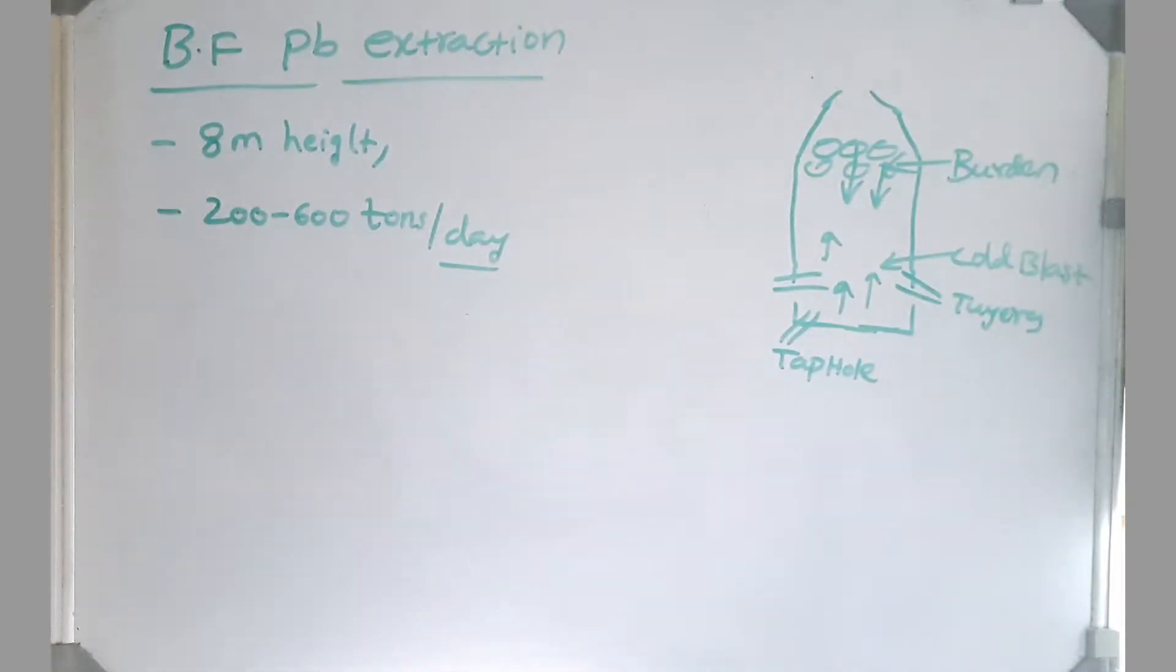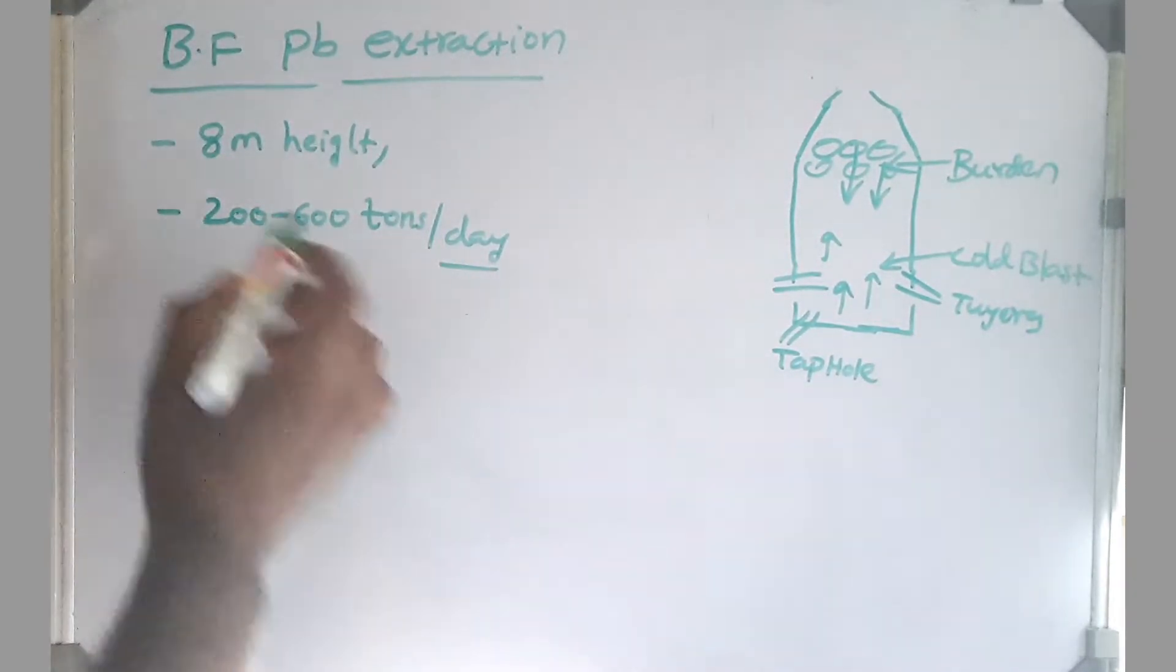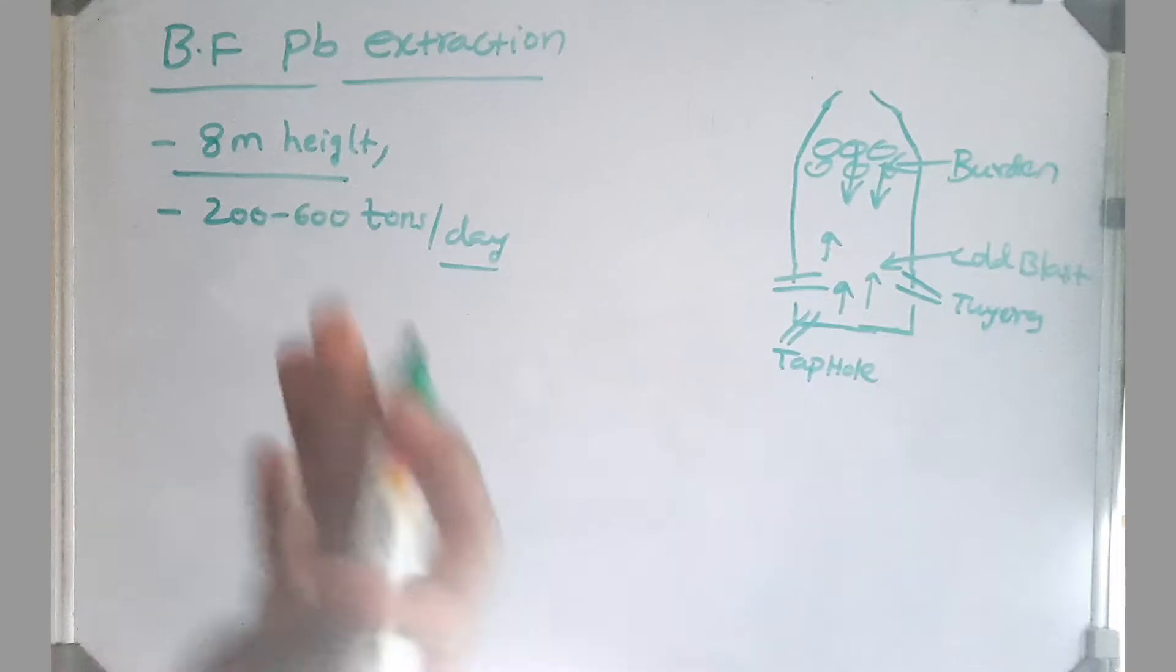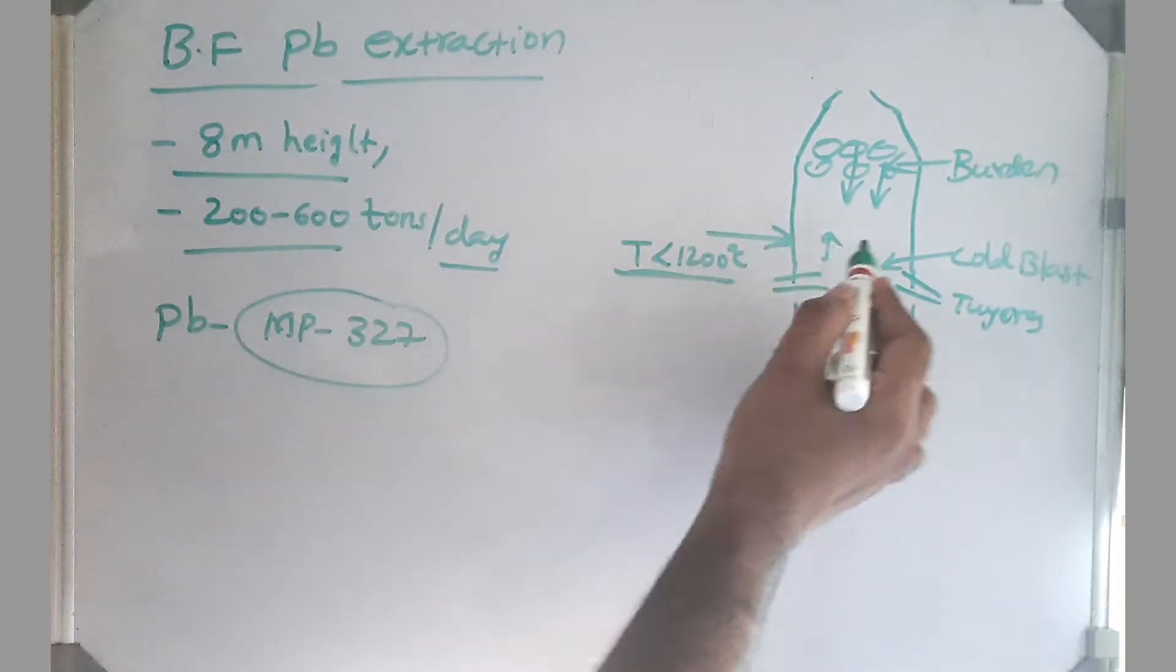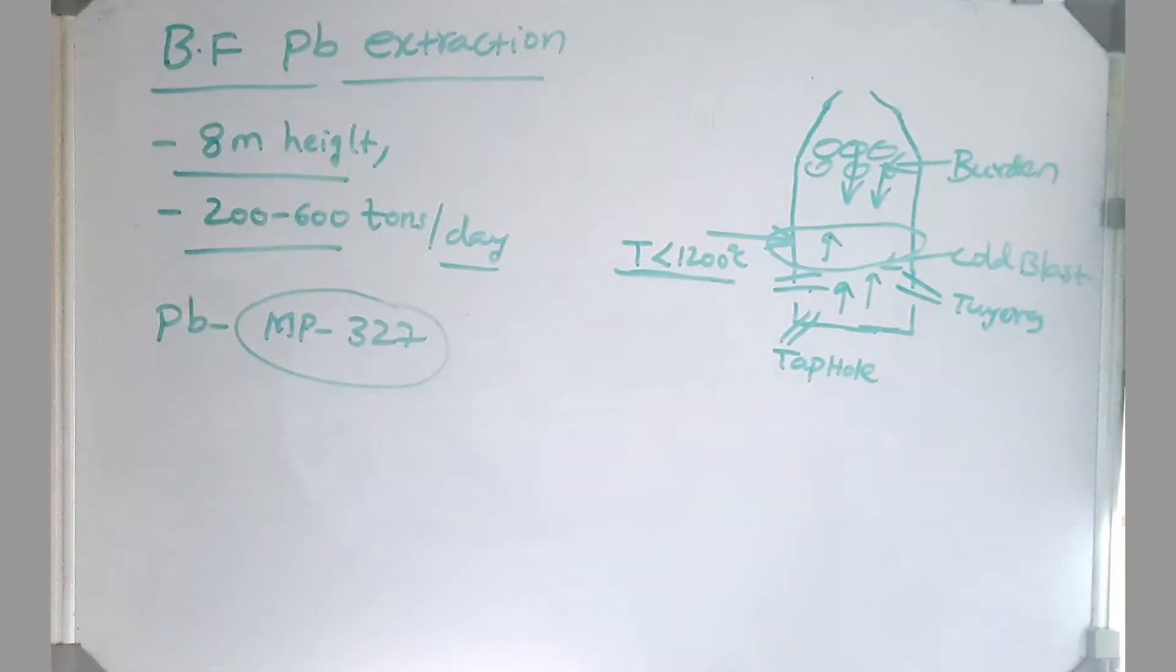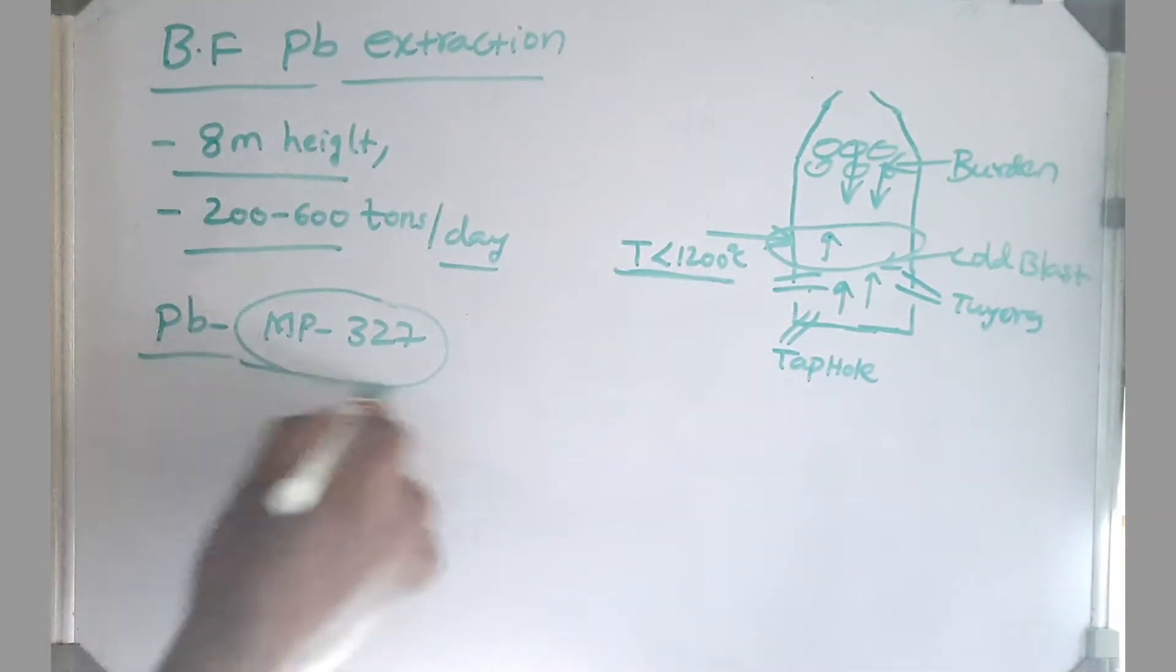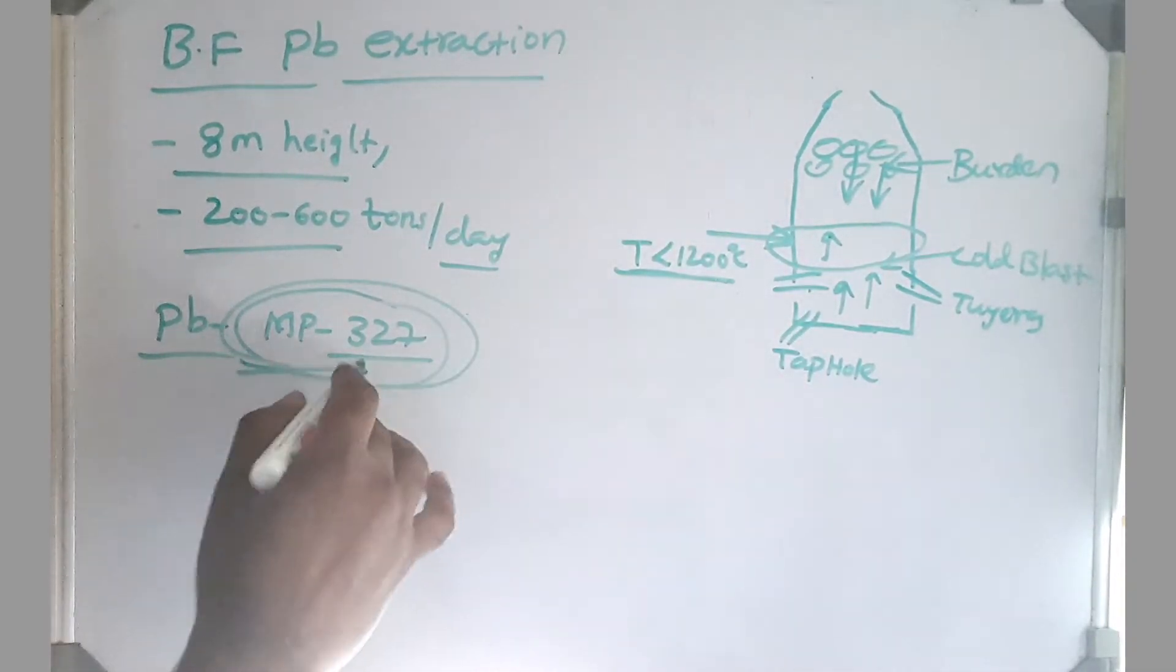Now let's look at blast furnace lead extraction. Our blast furnace is exactly similar to the iron making blast furnace but the size is very small. It is just 8 meters height and it can produce 200 to 600 tons per day. The operating temperature is always kept around less than 1200 degrees centigrade. The boss temperature, the temperature just above tuyeres, is kept around less than 1200 degrees centigrade. Why? Because our lead has very low melting point, it is just 327 degrees centigrade. So there is a chance of losing lead as fumes.